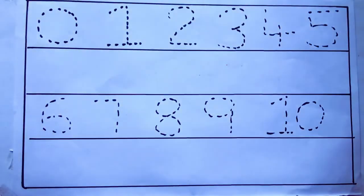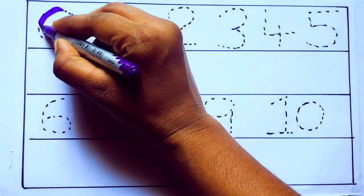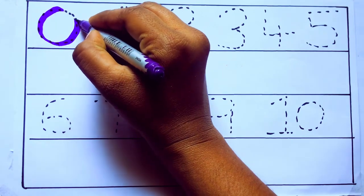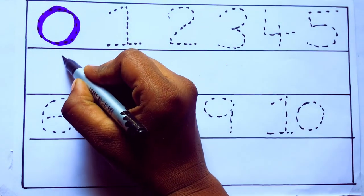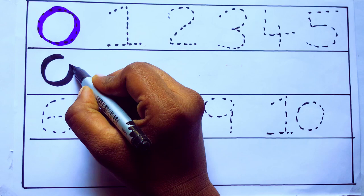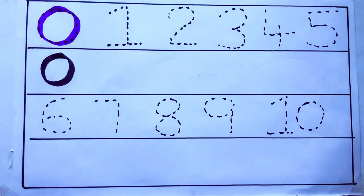Let's draw numbers. Violet color 0, Z-E-R-O. Zero, zero, zero. Brown color.